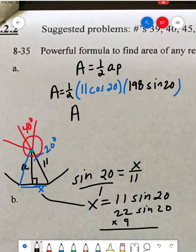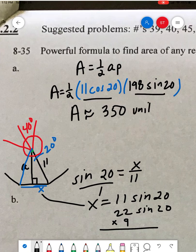You pop that all into the calculator, you got to be careful with the parentheses, or just do it in pieces. But don't round until the end, you're going to get about 350 units squared.